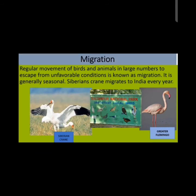Some migratory insects include monarch butterflies, which start their migration from different centers in North America and end in California and Mexico in the winter season. Locusts are another insect that travel long distances for food — millions of migratory locusts form a black cloud in the sky and consume all vegetation in their path, leaving famine behind.